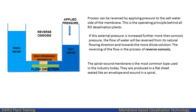The process can be reversed by applying pressure to the salt water side of the membrane. This is the operating principle behind all RO desalination plants. If this external pressure is increased further beyond the osmotic pressure, the flow of water will be reversed from its natural flowing direction and towards the more dilute solution.